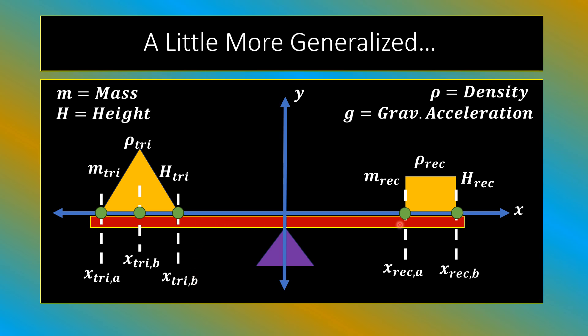There are also two other green points, x-tri a and x-tri b. Indirectly below the peak of the isosceles triangle is x-tri b, which is also halfway between x-tri a and x-tri c. We specify mass as m, height as h, density as rho, and g as gravitational acceleration.